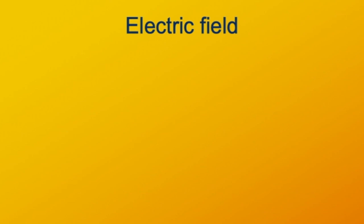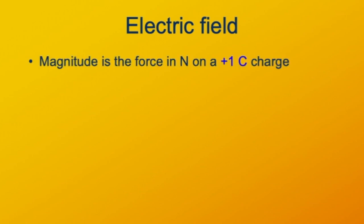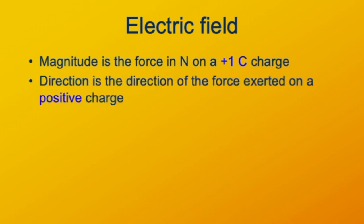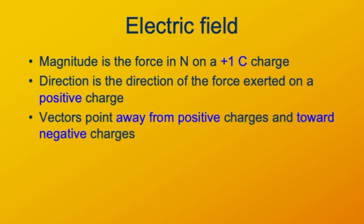In terms of the magnitude and direction of this vector: the magnitude of an electric field is given as the force in newtons on a plus one Coulomb charge. The direction is the direction of the force exerted on a positive charge. So imagine a positive test charge somewhere in space — the electric field tells us what the force exerted on this test charge would be, both its magnitude and its direction. Electric field vectors must point away from positive charges and toward negative charges, because a positive test charge would be repelled by a positive charge and attracted by a negative charge.